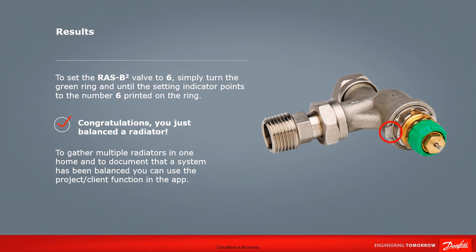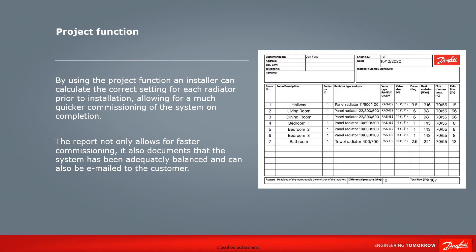Congratulations, you've just balanced the radiator in a fraction of the time it would normally take. If you have multiple radiators in one home to calculate, you can do so by using the project function in the app. This allows you to calculate the setting for each radiator prior to installation, enabling you to easily balance the entire system in a fraction of the time. The report generated can also be shared via email with customers and allows you to document that you have balanced the heating system.